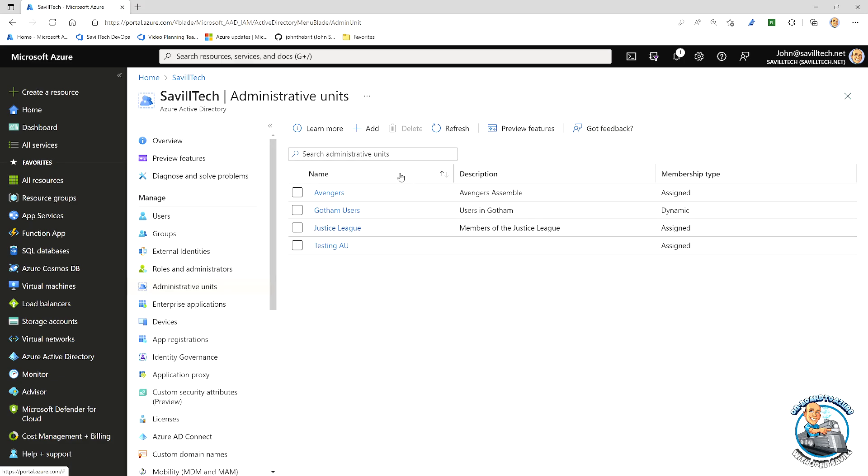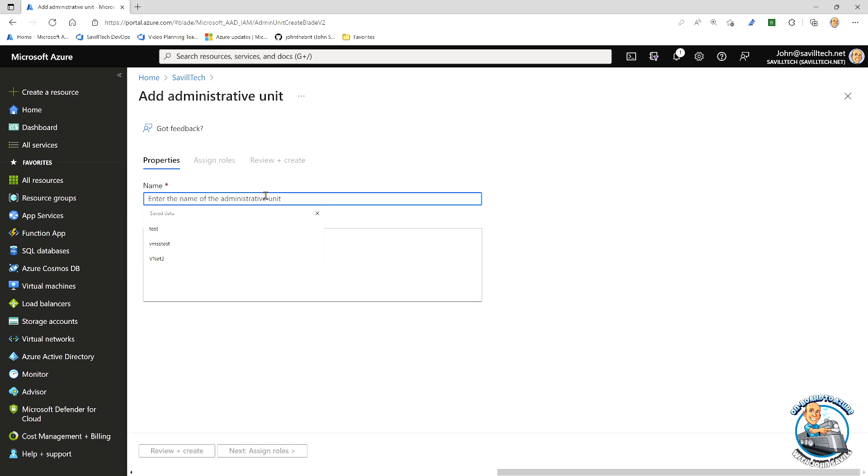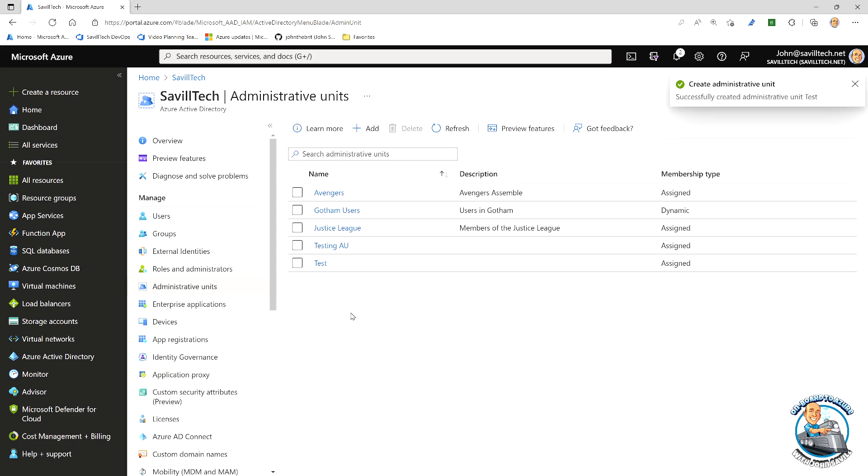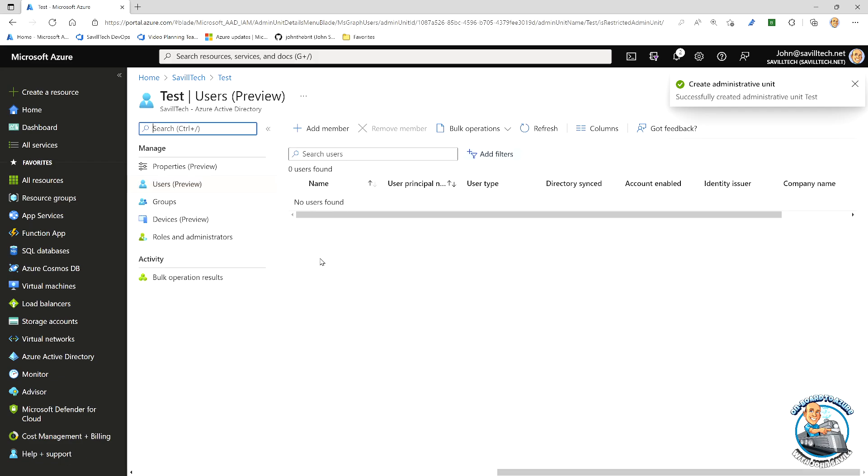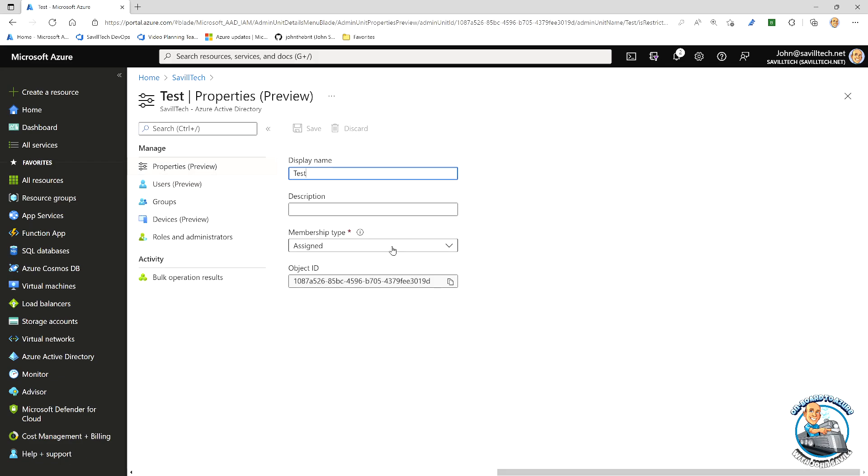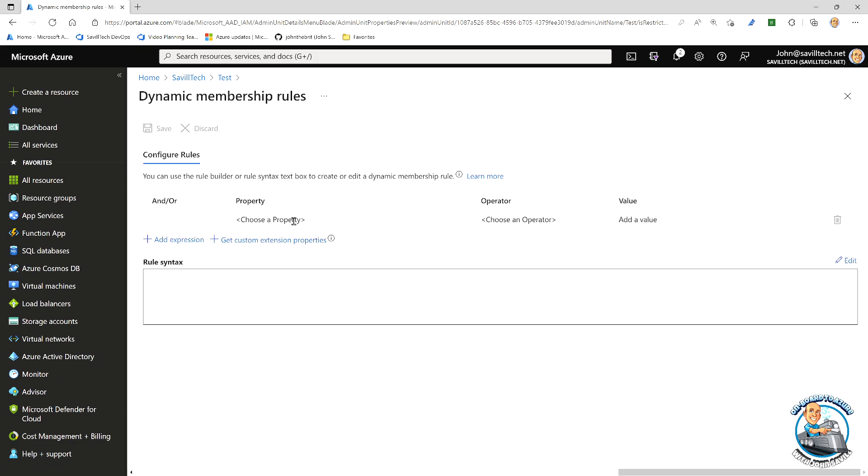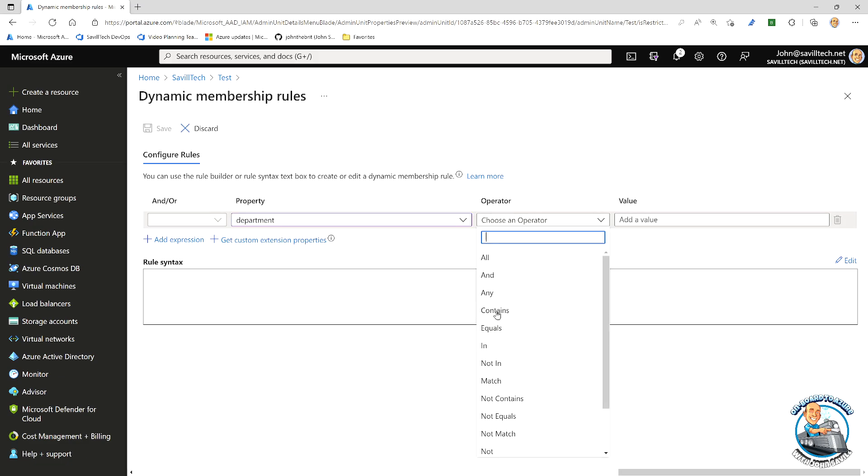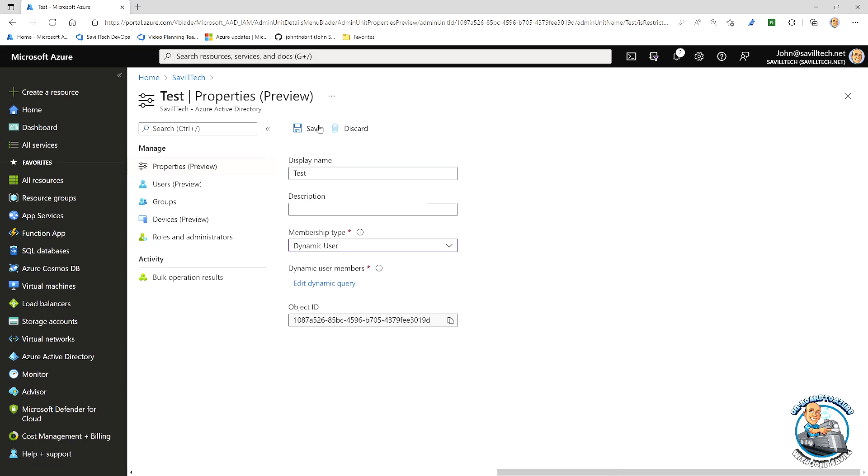To actually see how this works, if we just go out of this for a second, it's super simple. I'm going to add a new AU. I'll just call this test for speed. I could assign a certain role now. I don't have to. I can do it later on. And review and create. Once it's created, I can just go to the properties, change it from assigned to dynamic user. From here, I would add the query. So in my case, I chose city, but you could do department. My department, it could be contains, but I'll say equals Justice League, for example. And save. Hit save.